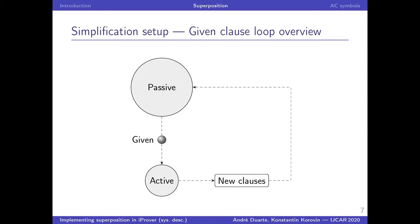A typical given clause loop looks like this. The clauses start in the passive set, then one given clause at a time is activated, all of the inferences between the given and active set are performed, and the new clauses are put back into passive until either a contradiction is found or the passive is empty, meaning that the set is saturated. So this is the basic form of a given clause loop, which is also what's implemented in iProver.